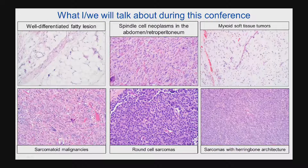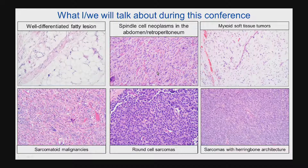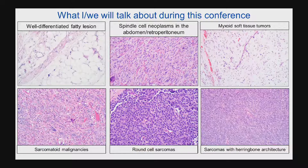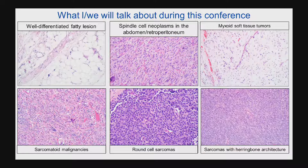I wanted to give you a bird's eye view of what I'm going to be talking about during my three lectures, so you have a roadmap of where I'm going. Today we're going to talk about well-differentiated fatty lesions, as well as spindle cell neoplasms that can occur in the abdominal cavity and retroperitoneum. Then on Saturday morning, we're going to finish up and talk about other common patterns in soft tissue pathology, including myxoid soft tissue tumors, sarcomatoid malignancies, round cell sarcomas, and sarcomas with herringbone architecture.